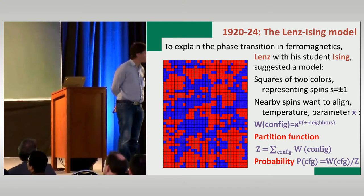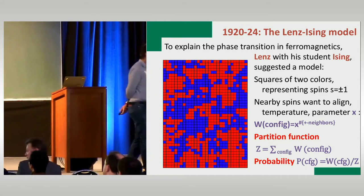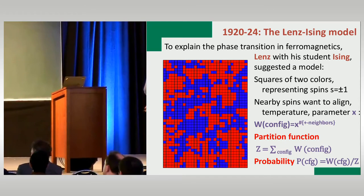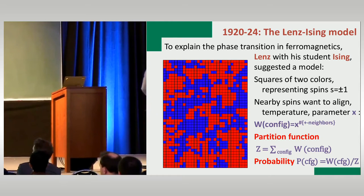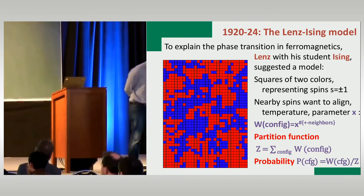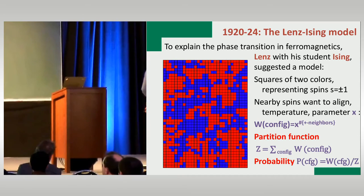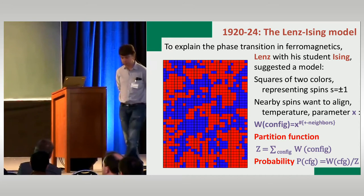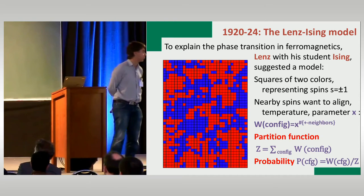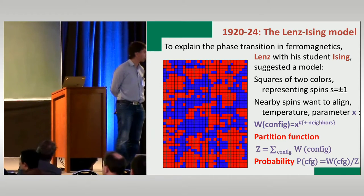The model was suggested by Lenz as a PhD topic to his student Ising — more correctly it should be called the Lenz-Ising model, but historically people started calling it Ising. You can study it on any graph; usually you use graphs in Euclidean space. You think of a crystal, oversimplify the real situation, and think that squares represent individual atoms which can be in two positions — blue or red — with an interaction only among nearby atoms, so each pair tries to be of the same color.